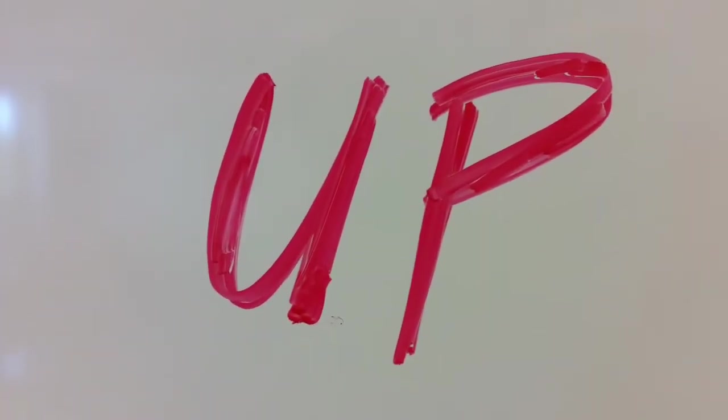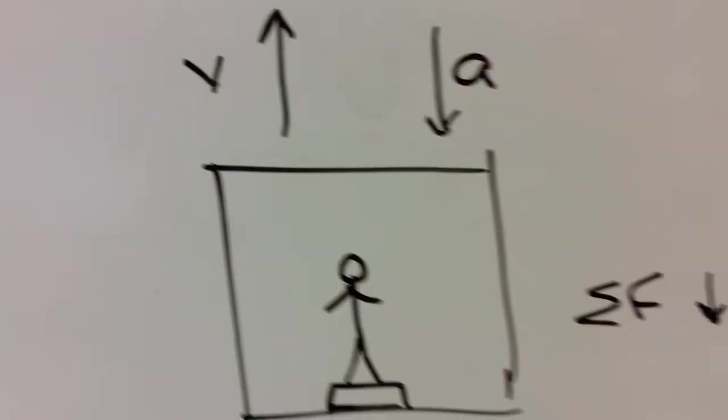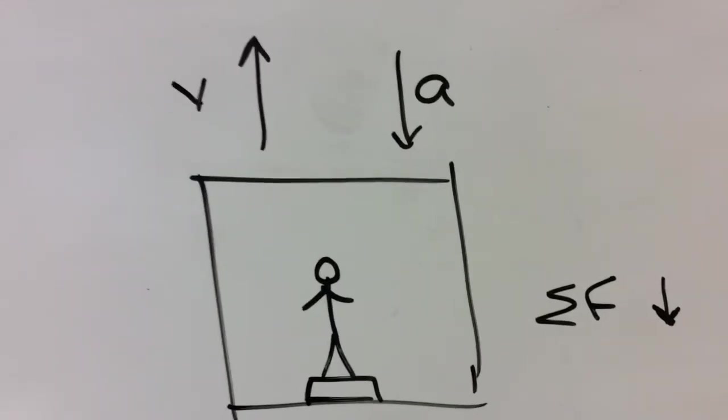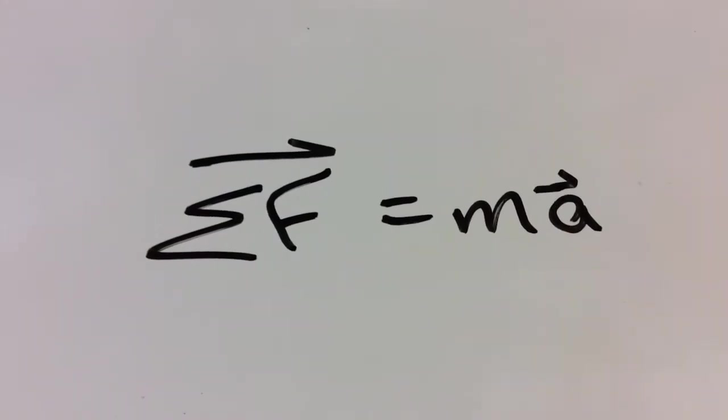Now the velocity is still up, but that doesn't really matter. The acceleration is what matters. Now reaching the top floor, your acceleration, that's the important one, is going to be down. So the net force that causes it is going to be down. That is a vector equation. The net force causes an acceleration in a particular direction.